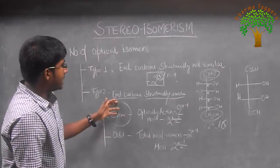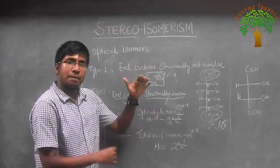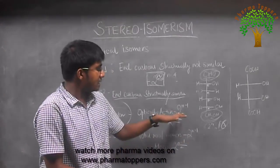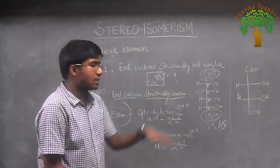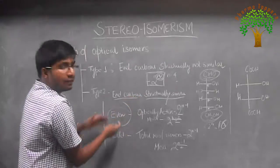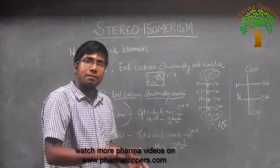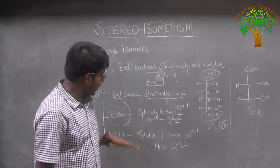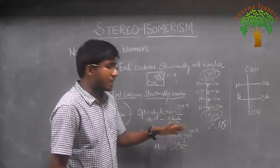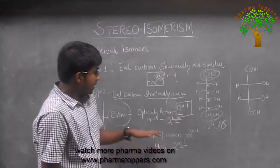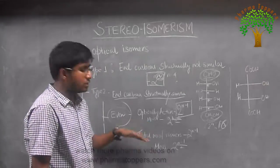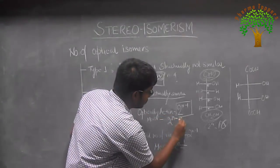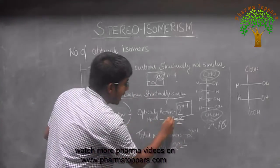Now the complicated case is when the end carbons are structurally similar. This can be divided into two groups: even and odd, meaning whether the number of carbons in the compound is even or odd. When it is even, the number of optically active isomers is given by the formula 2 to the power (n minus 1), and the number of optically inactive or meso compounds is given by 2 to the power (n minus 2) divided by 2.